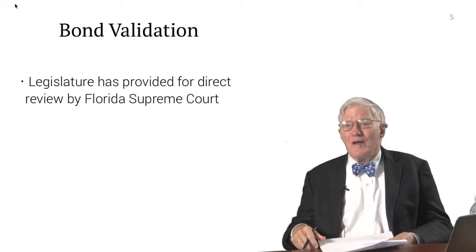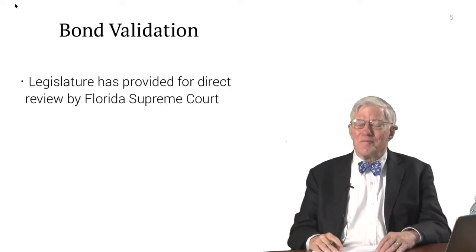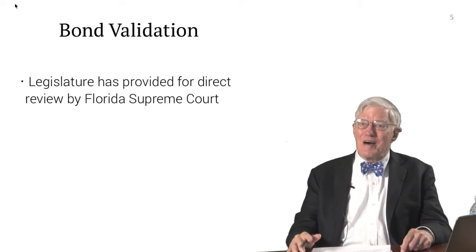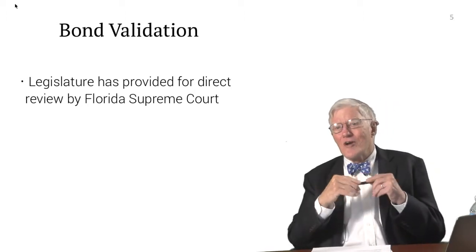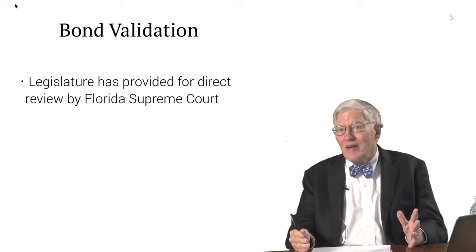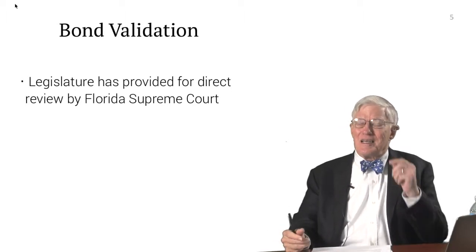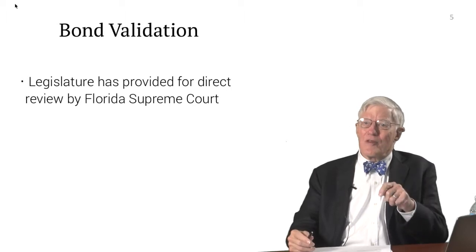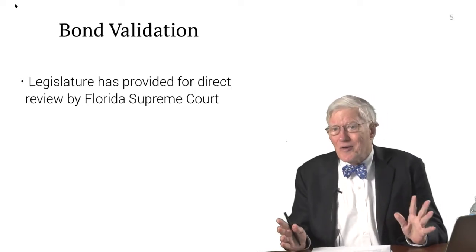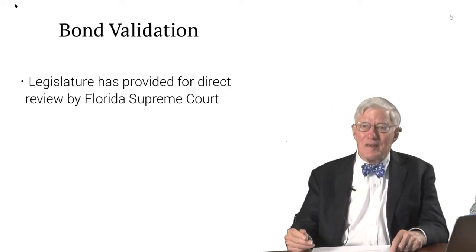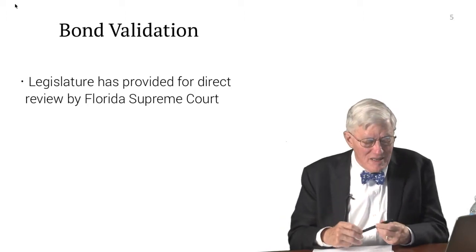When proceedings are before the court, bond counsel goes back to the state attorney and says, here's a brief you may want to file. Most state attorneys file the brief being suggested by bond counsel. Issues are raised, decided by the circuit court, then appealed to the Florida Supreme Court so that we now have a matter of res judicata relating to those bonds. It's in the interest of bond counsel to raise as many issues as possible, so a great deal of the law in state constitutional law actually gets resolved through bond validation proceedings.